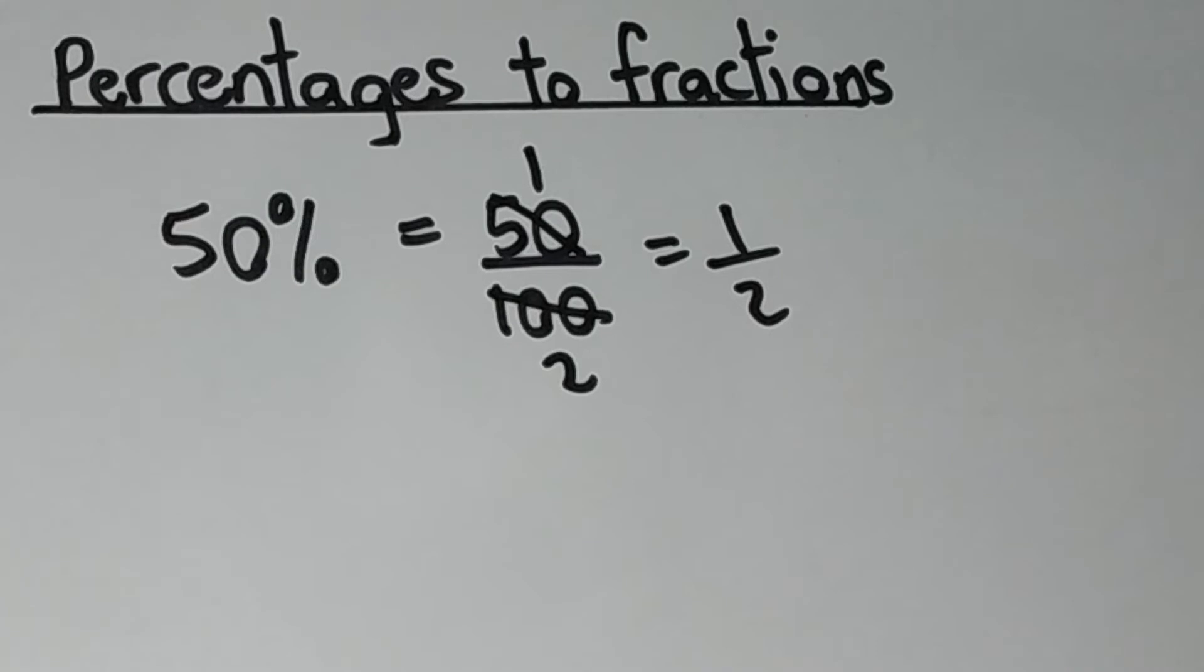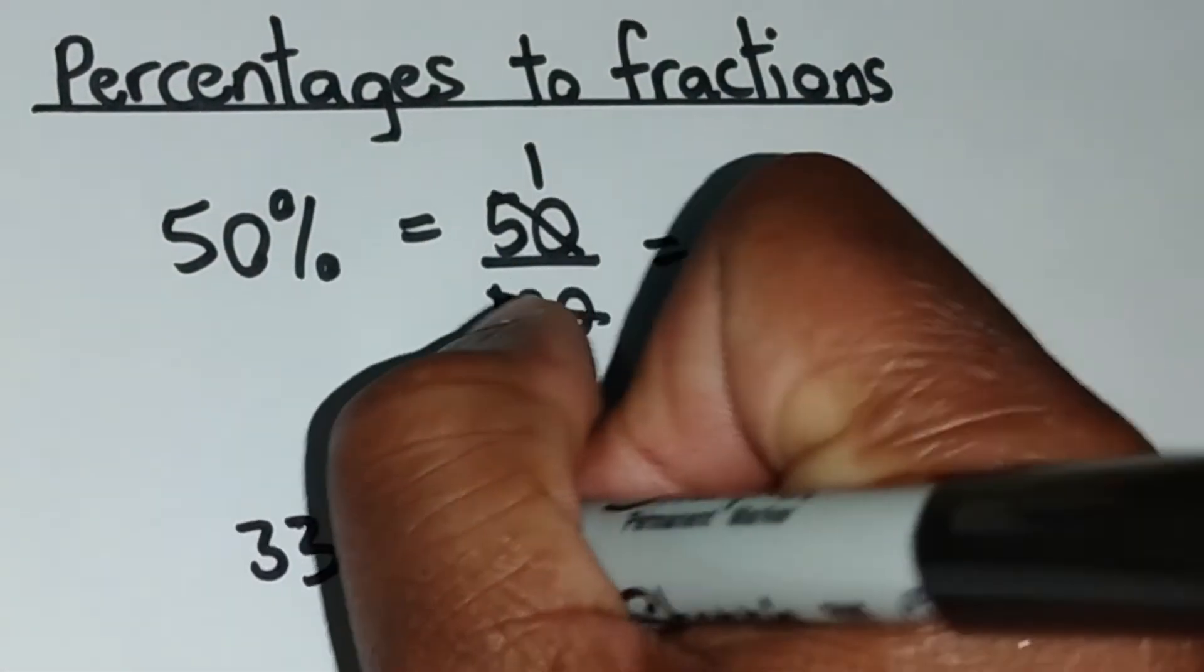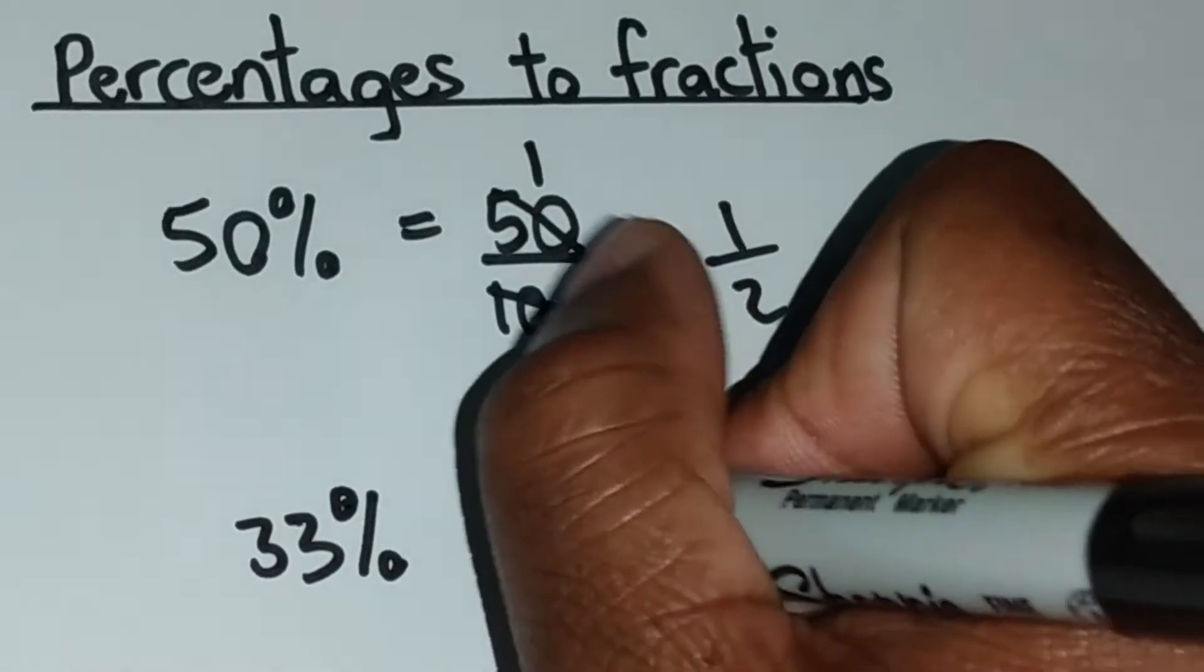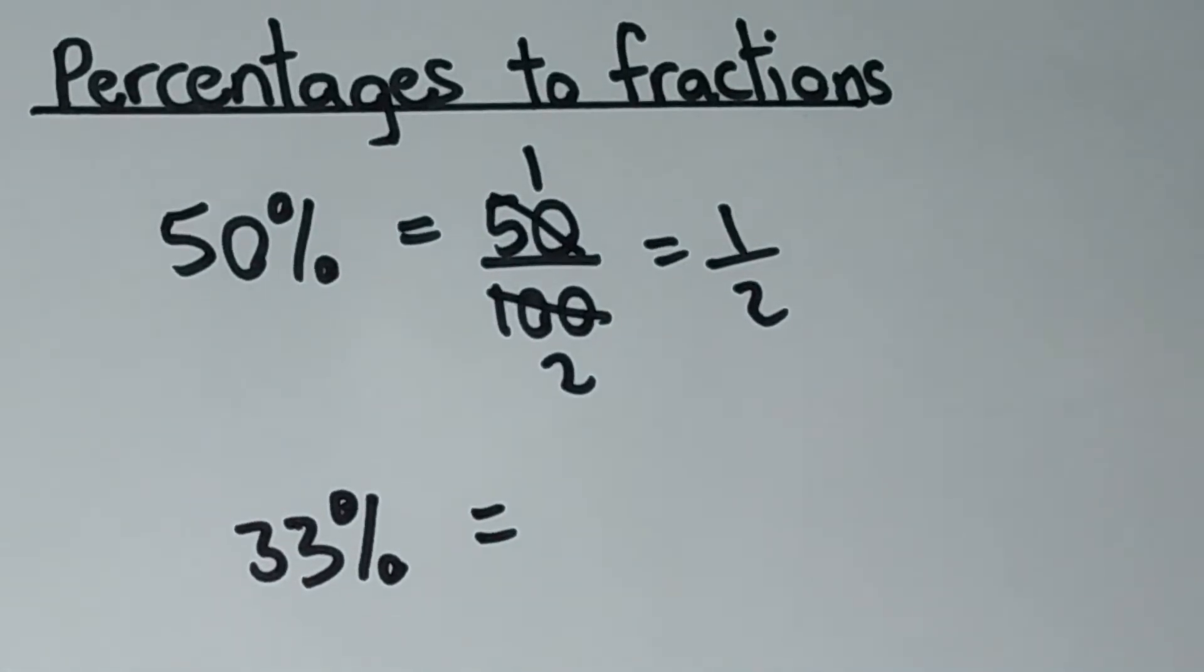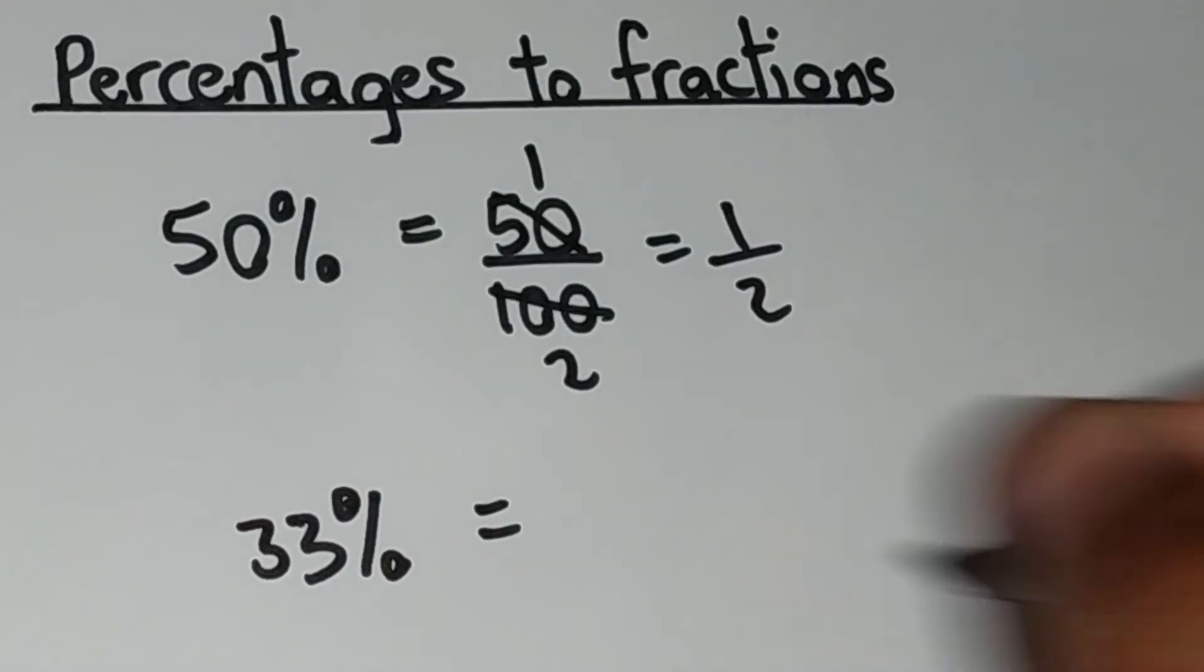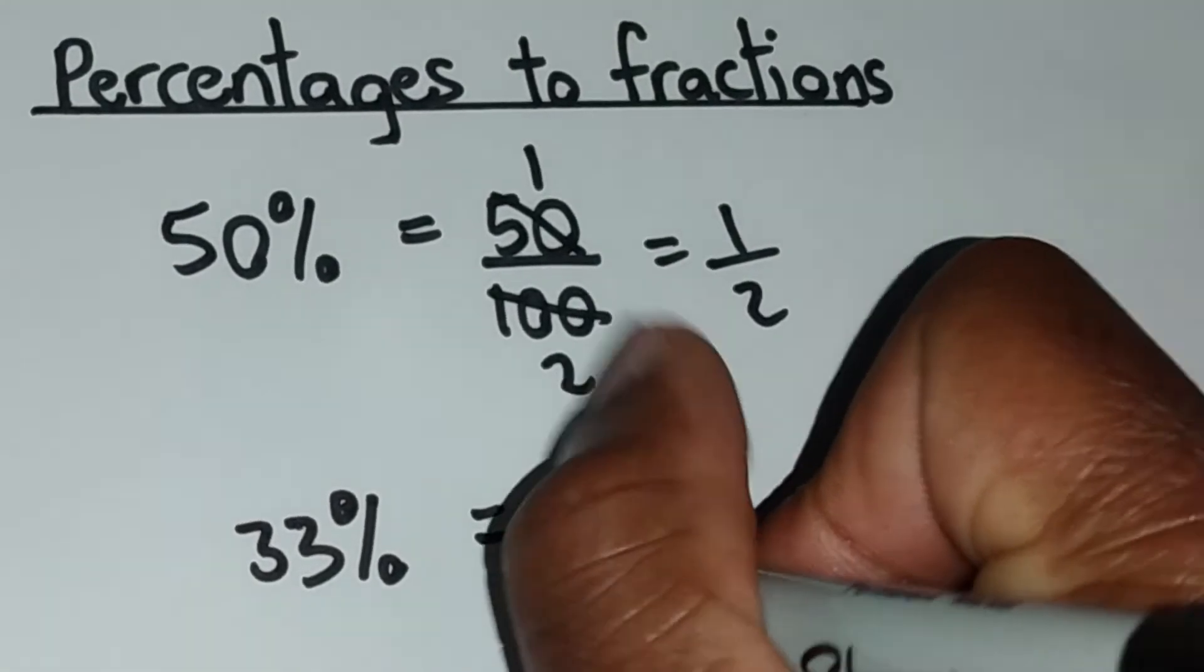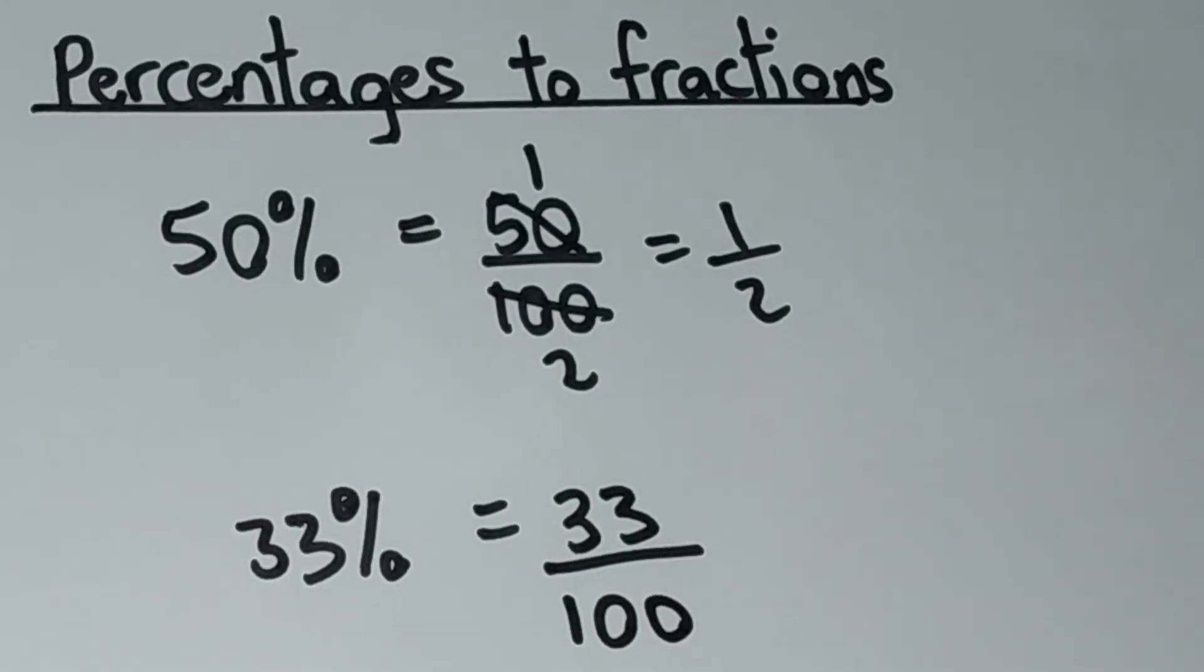Now let's look at another example. What if we had 33% and we wanted to convert this thing to a fraction. Again, percentage is just a ratio out of 100. So all we're required to do is to put this 33 here over 100.